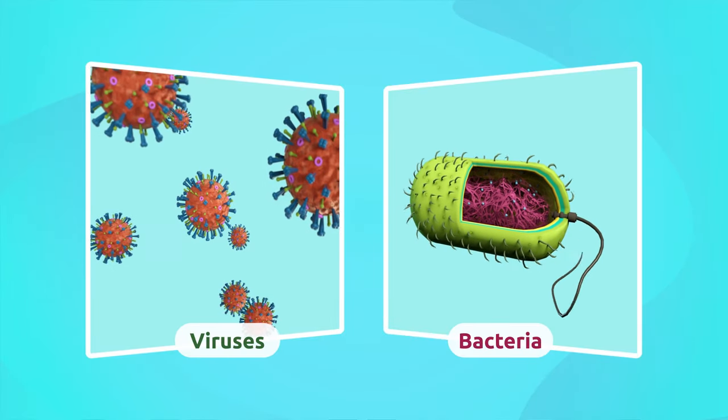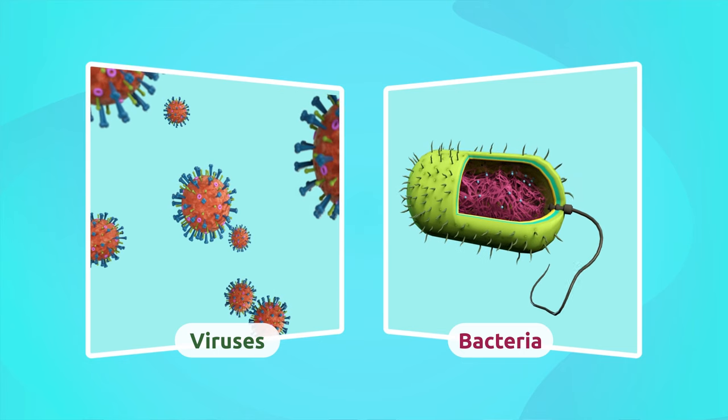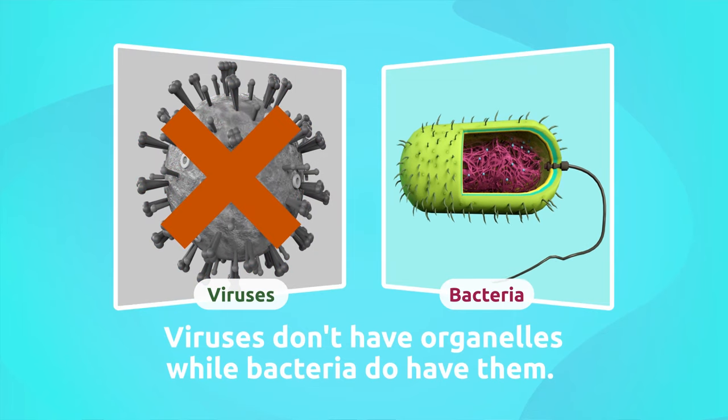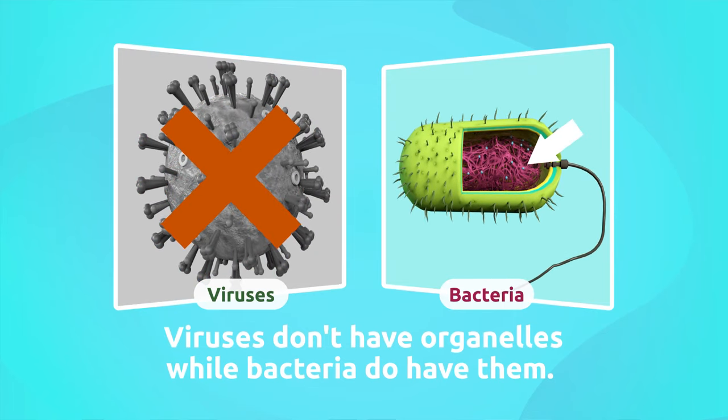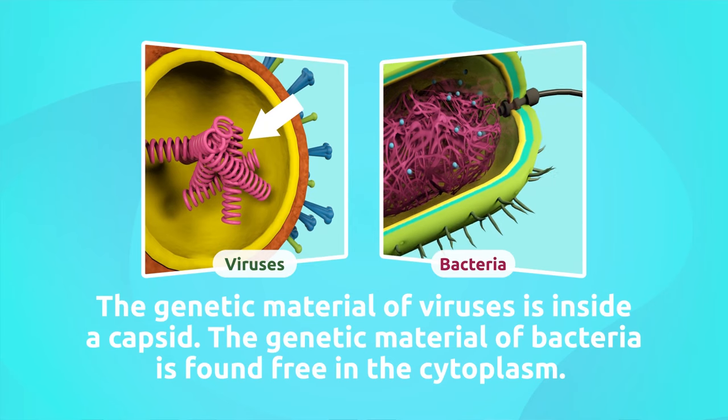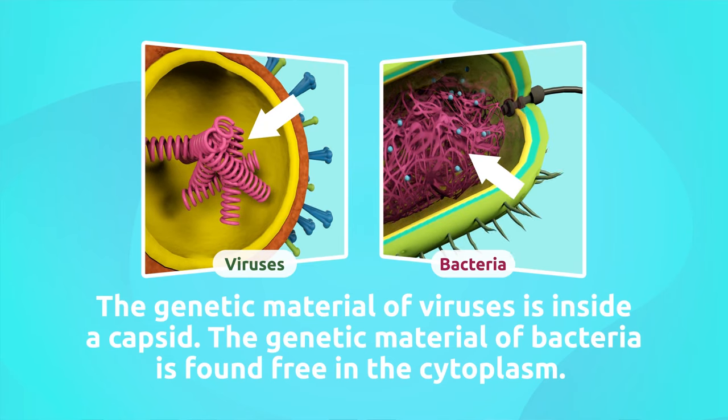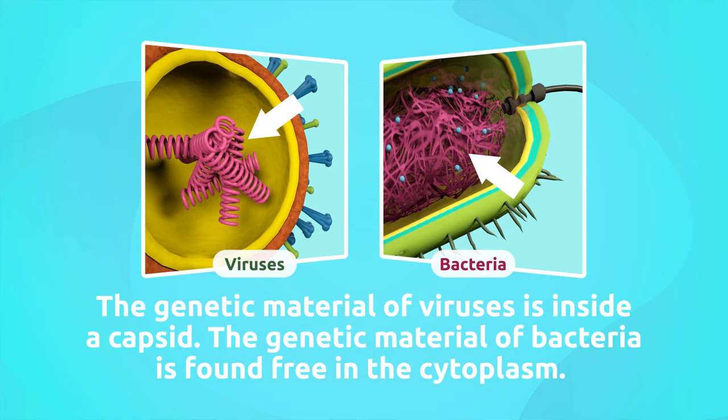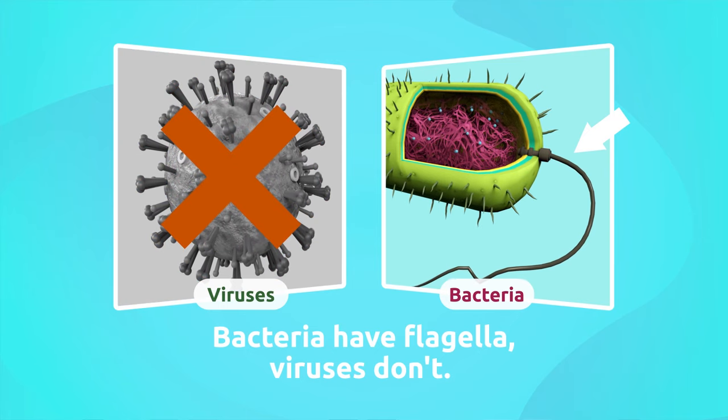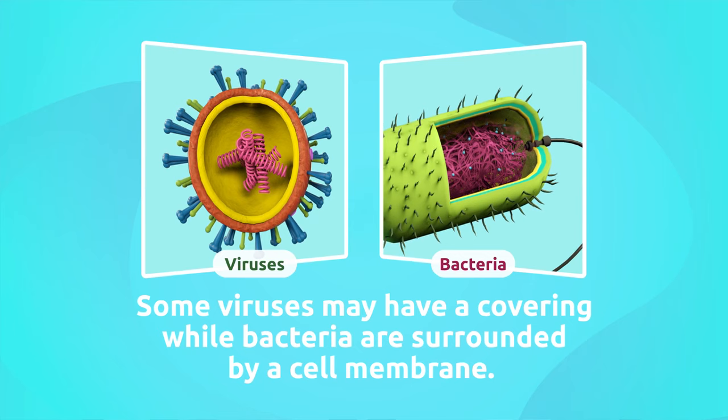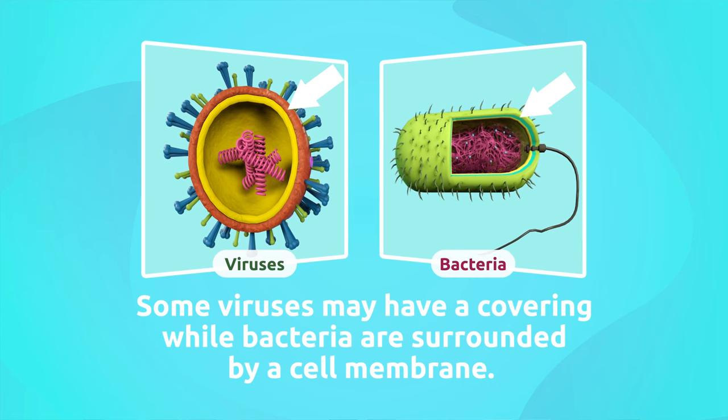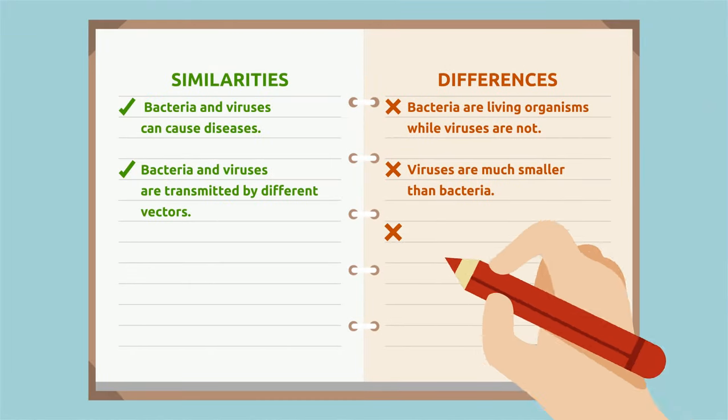If we compared the structure of a virus to that of a bacteria, we would find several differences. Viruses don't have organelles while bacteria do have them. Viruses don't have a cell membrane. The genetic material of viruses is inside a capsid. The genetic material of bacteria is found free in the cytoplasm. Bacteria have flagella, viruses don't. Some viruses may have a covering while bacteria are surrounded by a cell membrane. Another difference to note down: the structure.